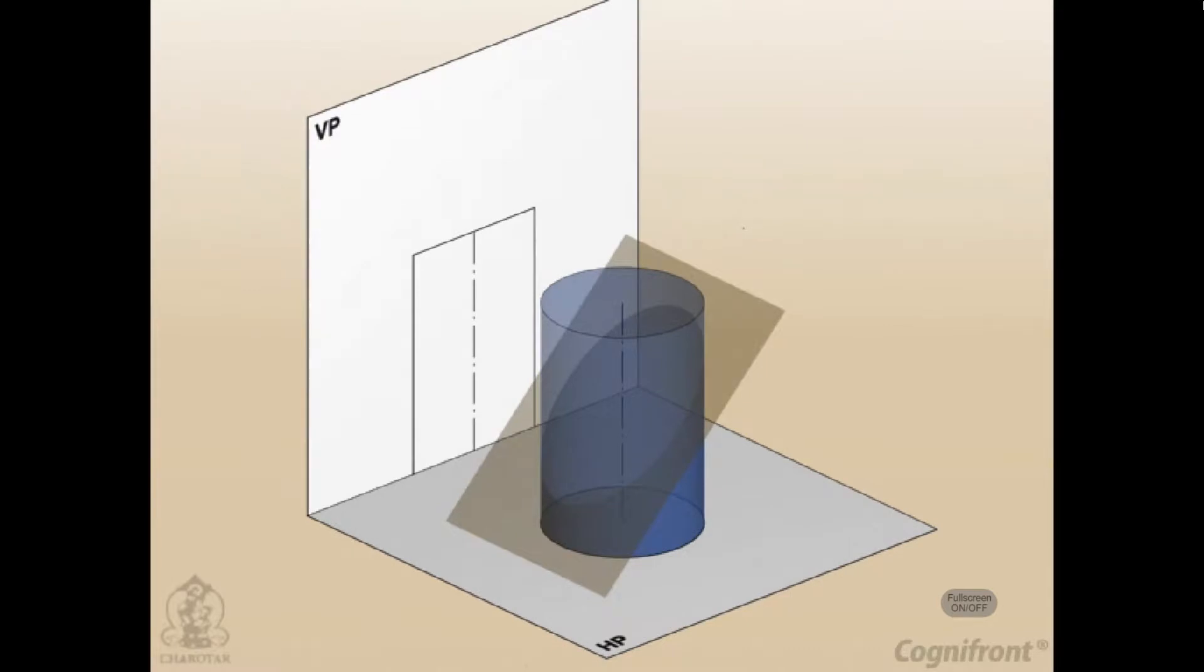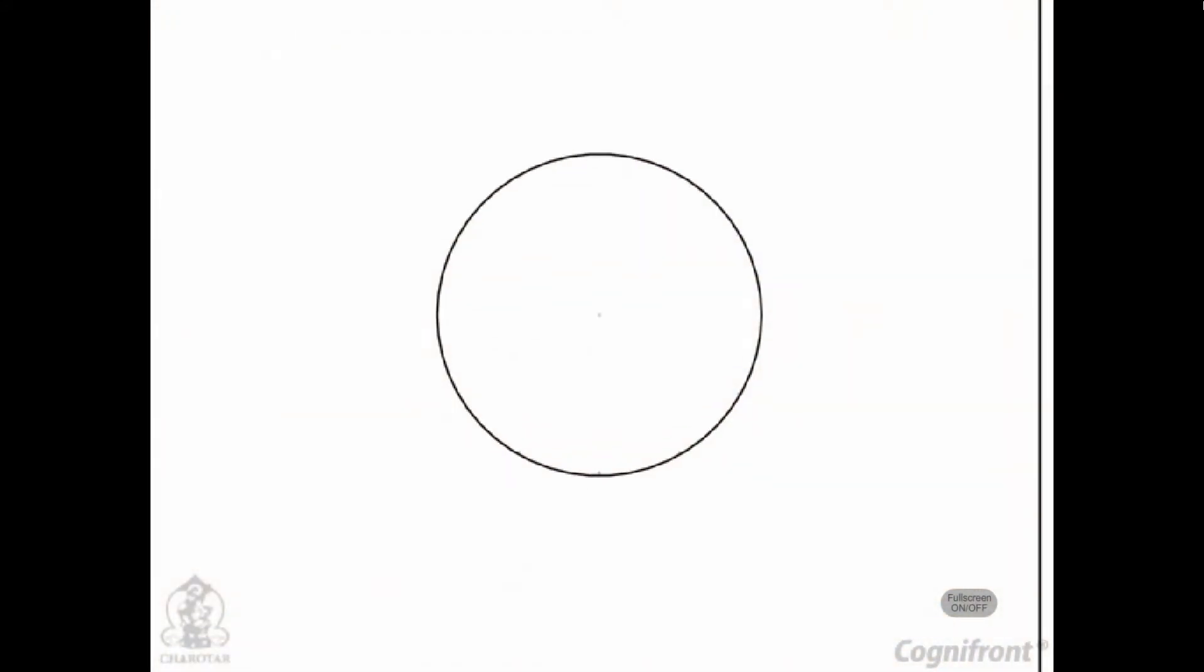As the cylinder has no edges, a number of lines representing the generators may be assumed on its curved surface by dividing the base circle into, say, 12 equal parts.